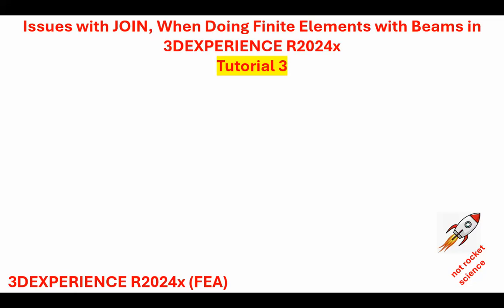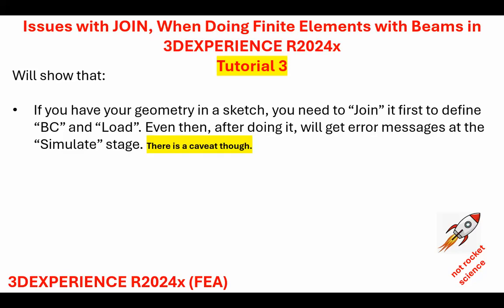This is still to do with joint operations in the platform. When I say the platform, the default software within the 3D Experience Platform is actually CATIA — I'm referring to CATIA v5 which is really v6. This has to do with joints. So if you have a structure to be modeled with beam elements, and that structure is entirely done in a sketch — in other words, a two-dimensional frame or two-dimensional truss.